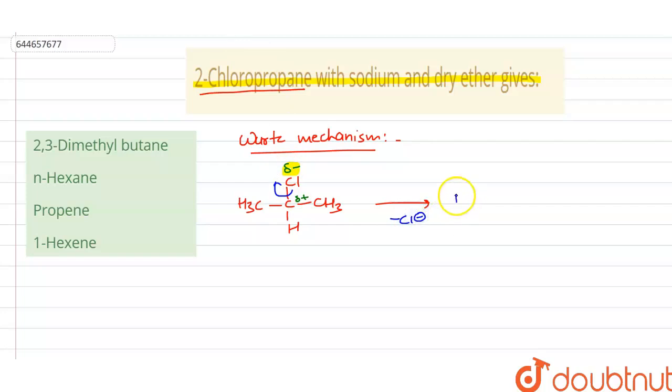It will leave the molecule and there will be formation of the carbocation like this: CH3-C+H-CH3. Now, we have Na which is an electropositive metal that gives its electrons.